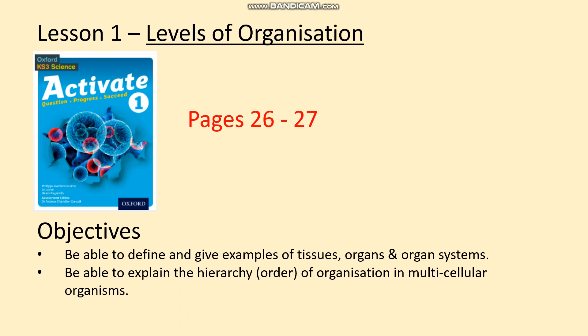Hello Year 7. This is the first lesson of the structure and function of body systems, entitled Levels of Organisation. You can find information about this lesson on pages 26–27 of the Activate book. By the end of the lesson you should be able to define and give examples of tissues, organs and organ systems, and be able to explain the hierarchy — the order — of organisation in multicellular organisms like ourselves.